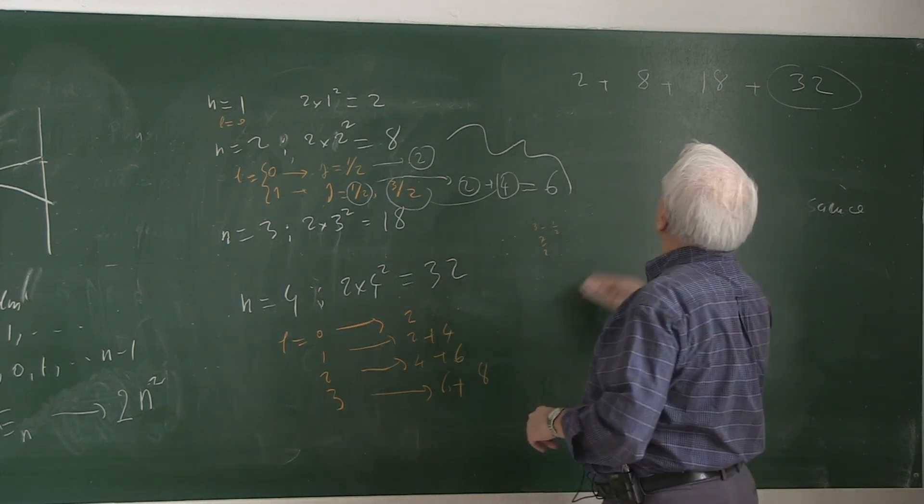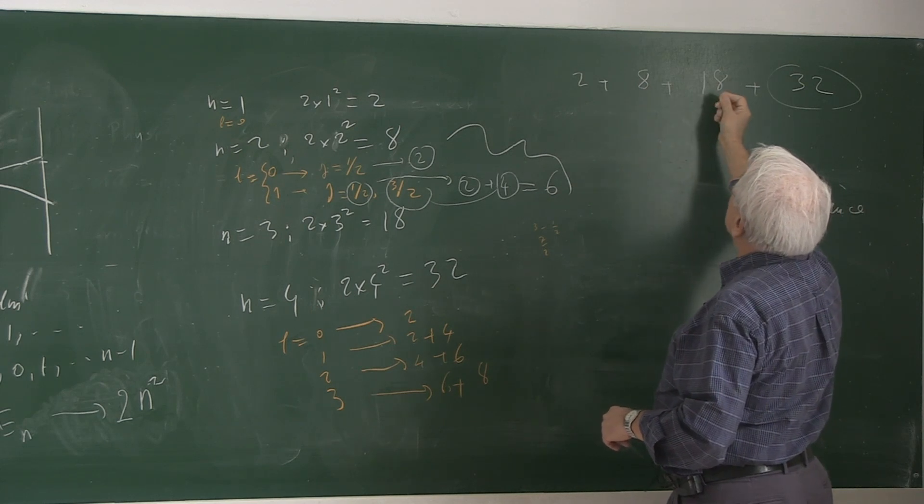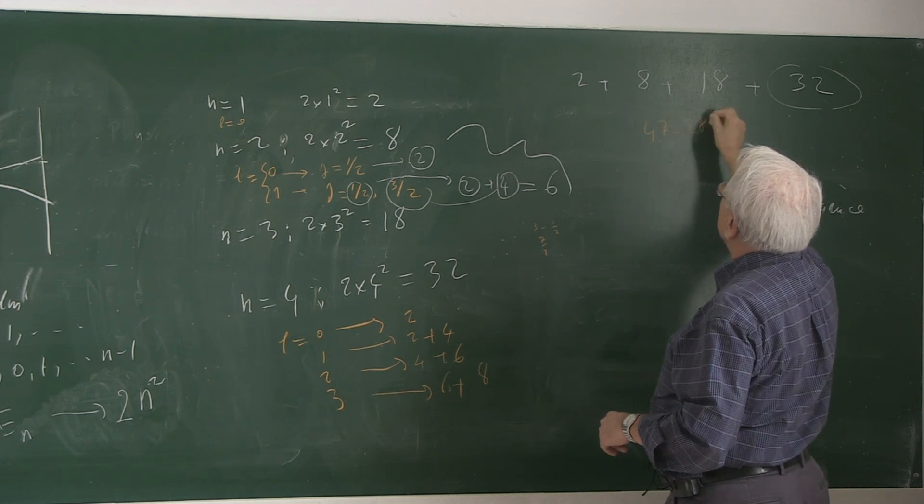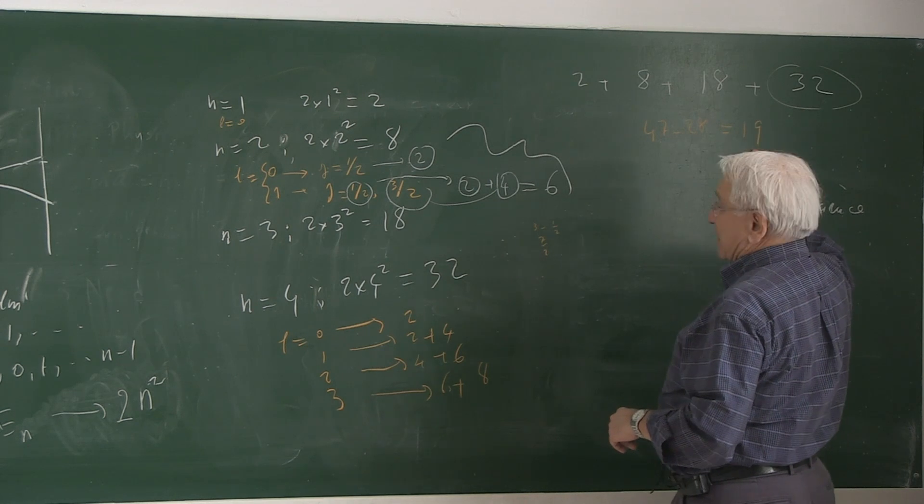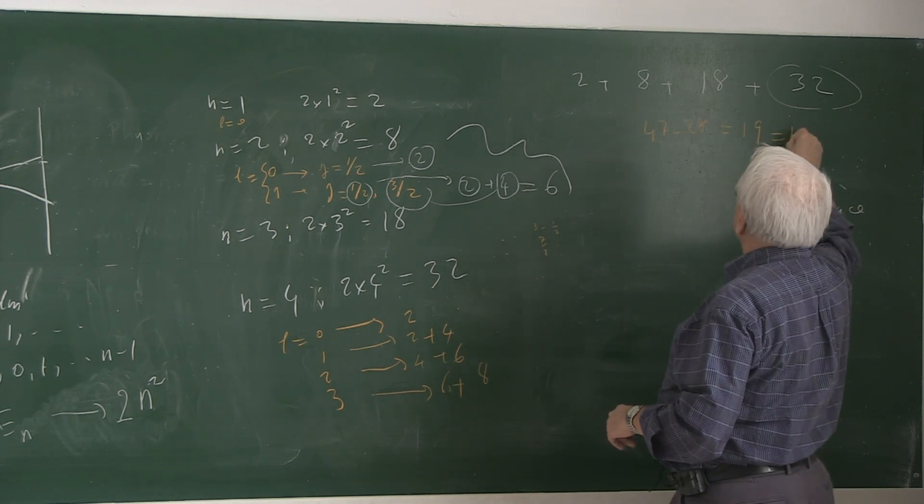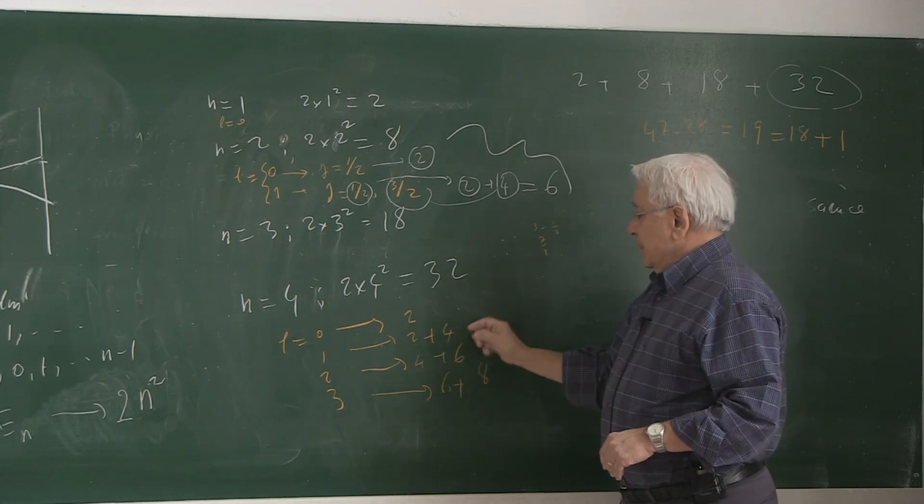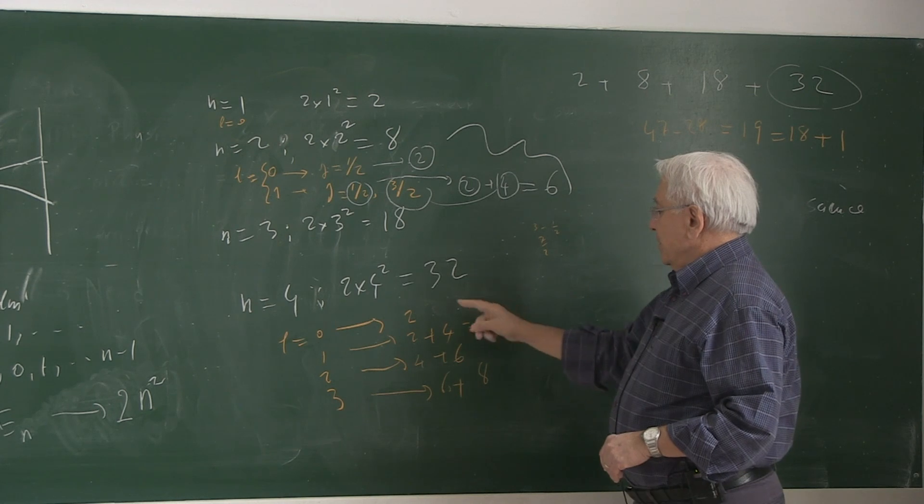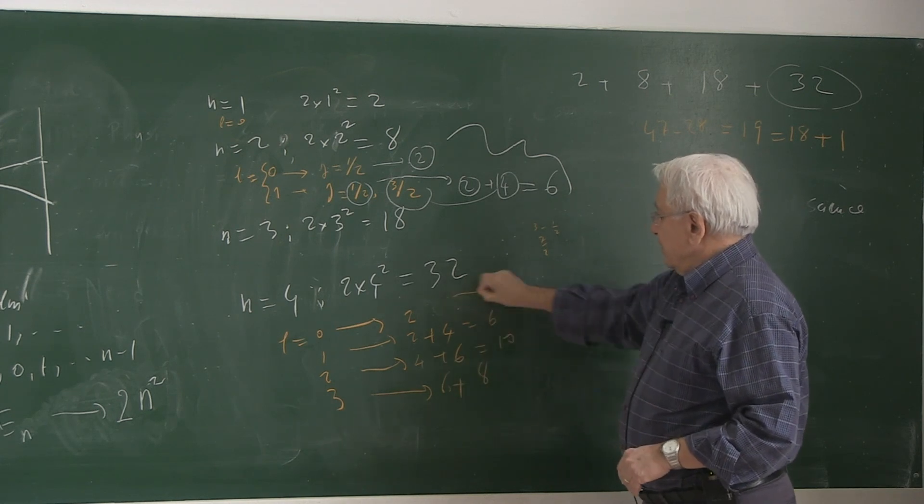These are the number of places to form closed shells. There is 2. What is missing in here? 10, 28 minus 47. How many I need? 19. 19 is composed of 18 plus 1. That's good. 2, 6 makes it 8. 10 makes it 18.